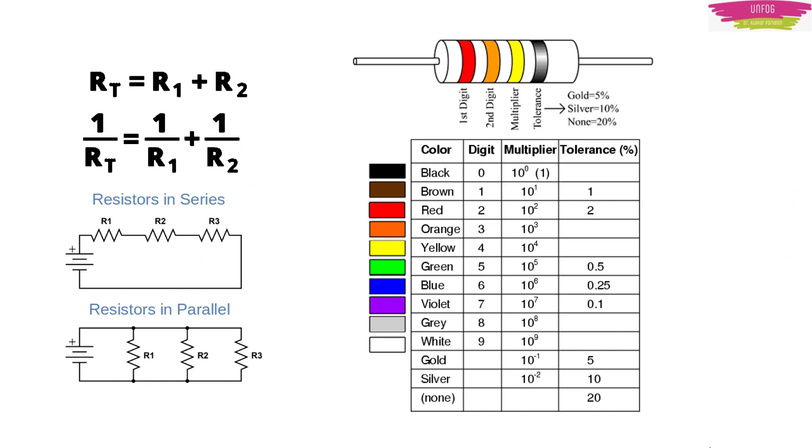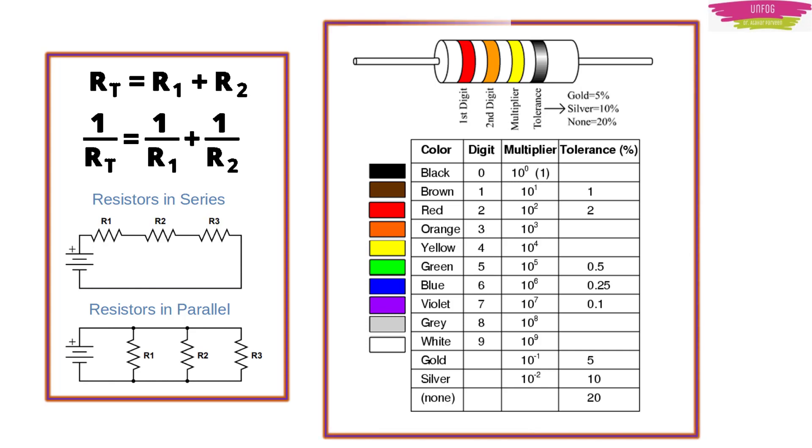A few more important points from which you can expect direct questions: one is about series and parallel resistors. If resistors are connected in series, you just sum them up. If they are connected in parallel, then you have 1/R_effective = 1/R₁ + 1/R₂ + 1/R₃ and so on. When you talk about resistors, it is important to understand the color coding of resistors. You should know the digit, the multiplier, and the tolerance value, especially for gold and silver, and if it is none also.